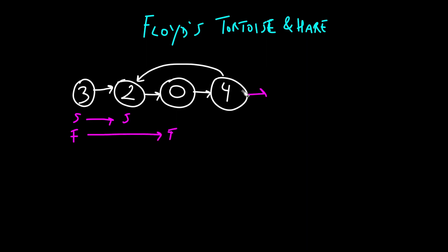Let's assume there was no cycle and this was the end of the list. If that was the case, at the next iteration, slow would be at this node. Fast would be at null. And when fast reaches null, it means that there was no cycle and we can return false.